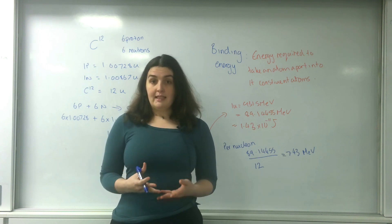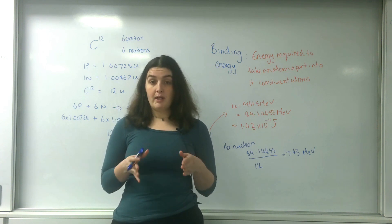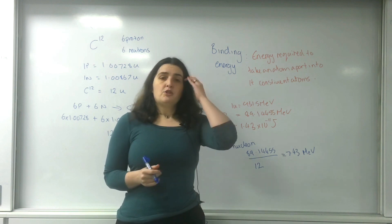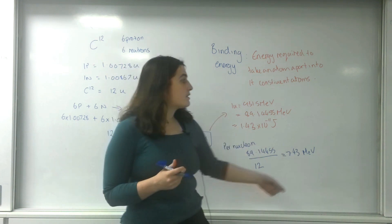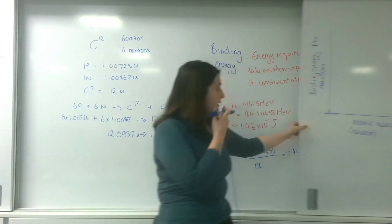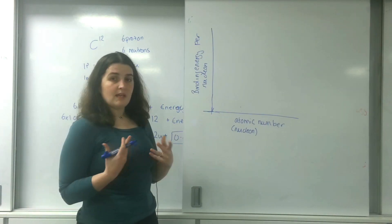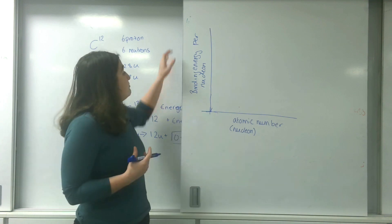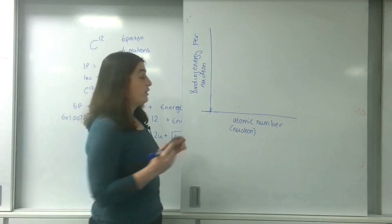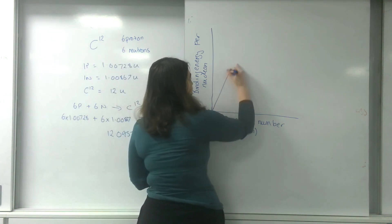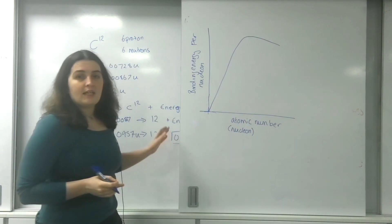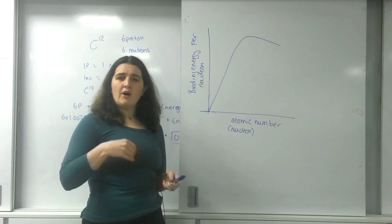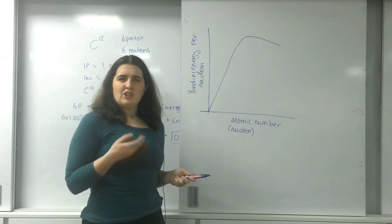If I plotted the values for the binding energy for every single element, from hydrogen all the way up to the uraniums, with atomic number for how many protons and neutrons they have on this axis and binding energy per nucleon here, I actually get a graph that looks like this. The binding energy actually increases to a point and then after that point the binding energy decreases.